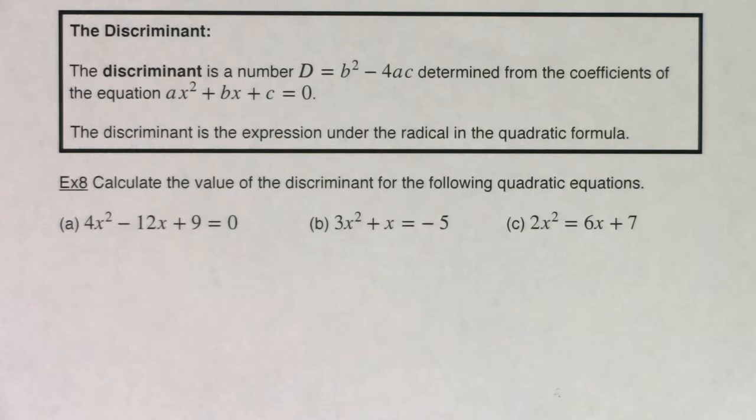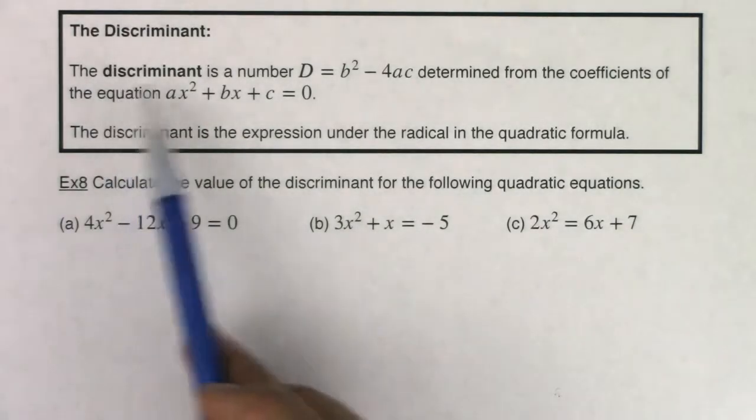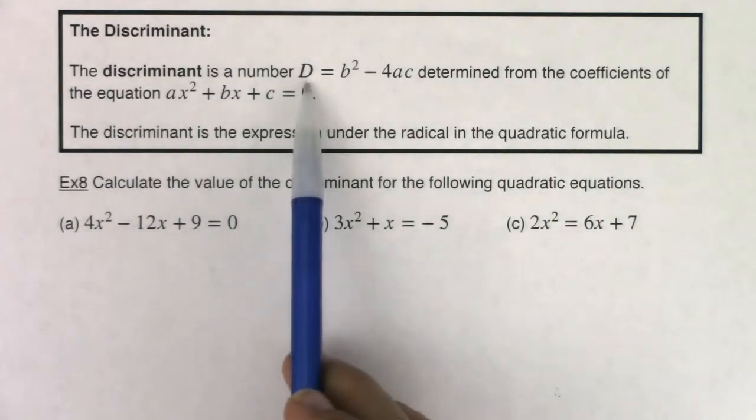Hey Math 31, let's pick up the discriminant. So the discriminant is a number we're going to call it capital D.